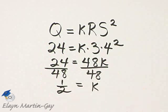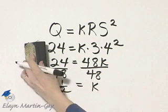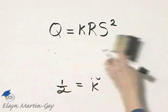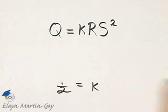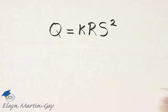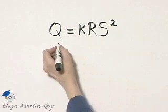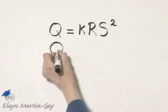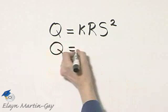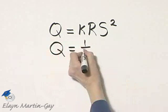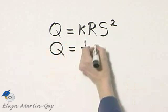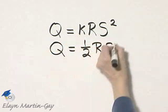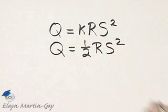So now that we know the value of K — K is 1 half — we can write down our equation: Q is equal to 1 half times R times S squared.